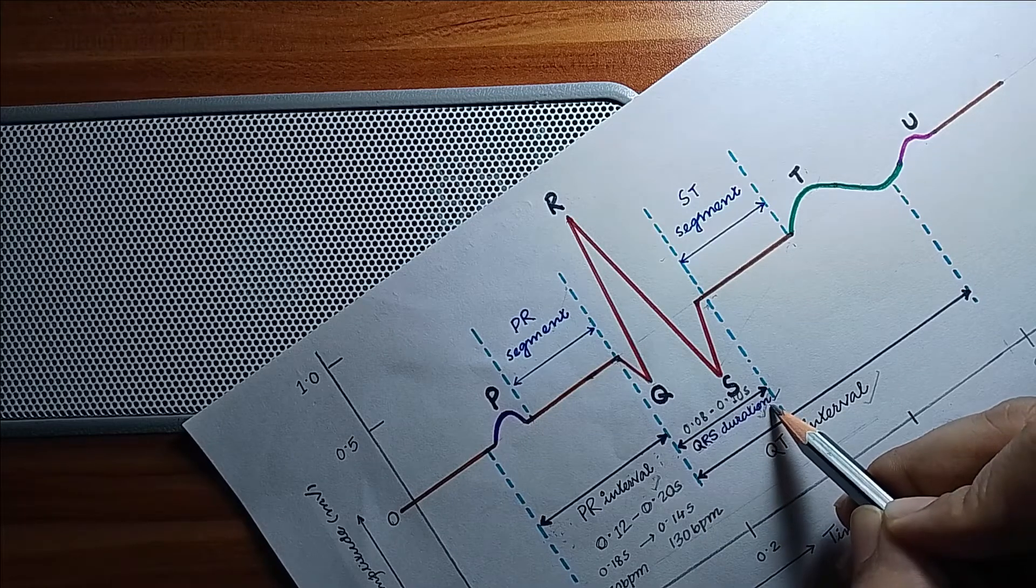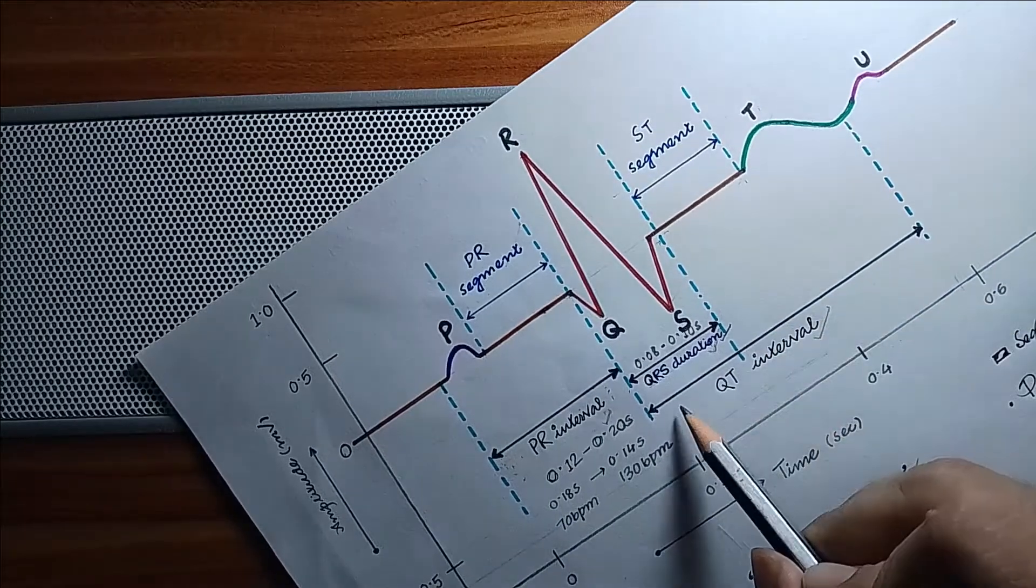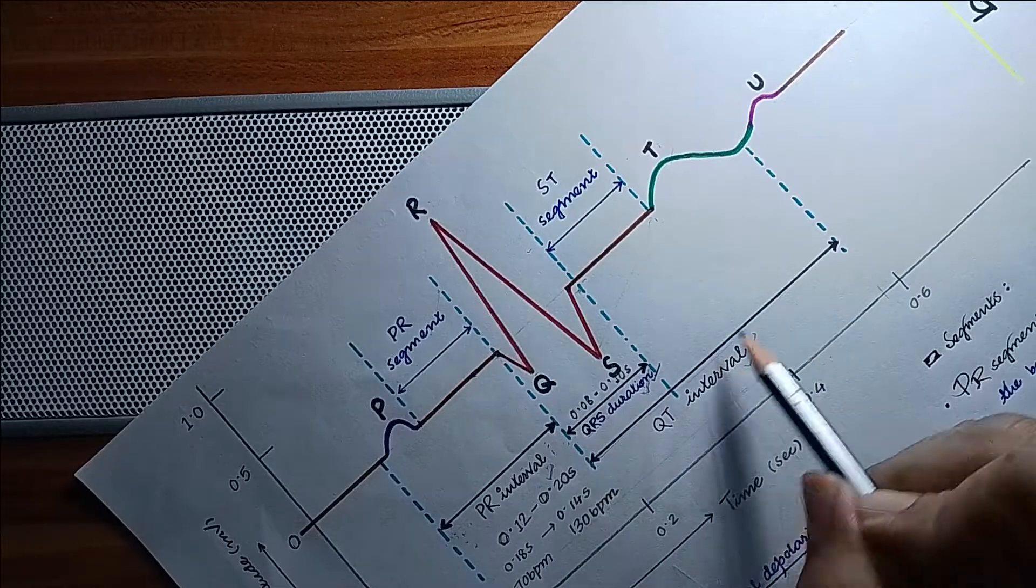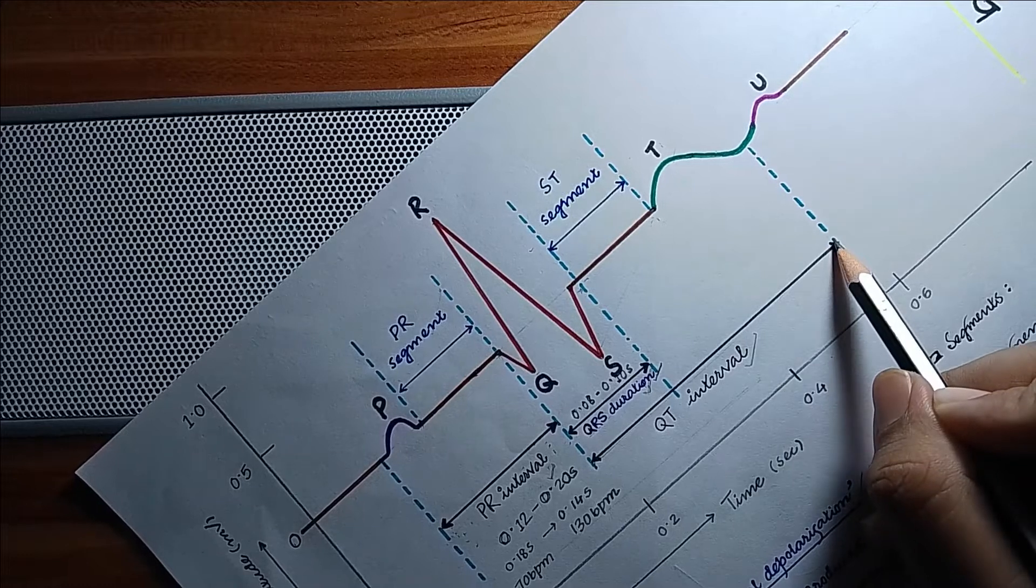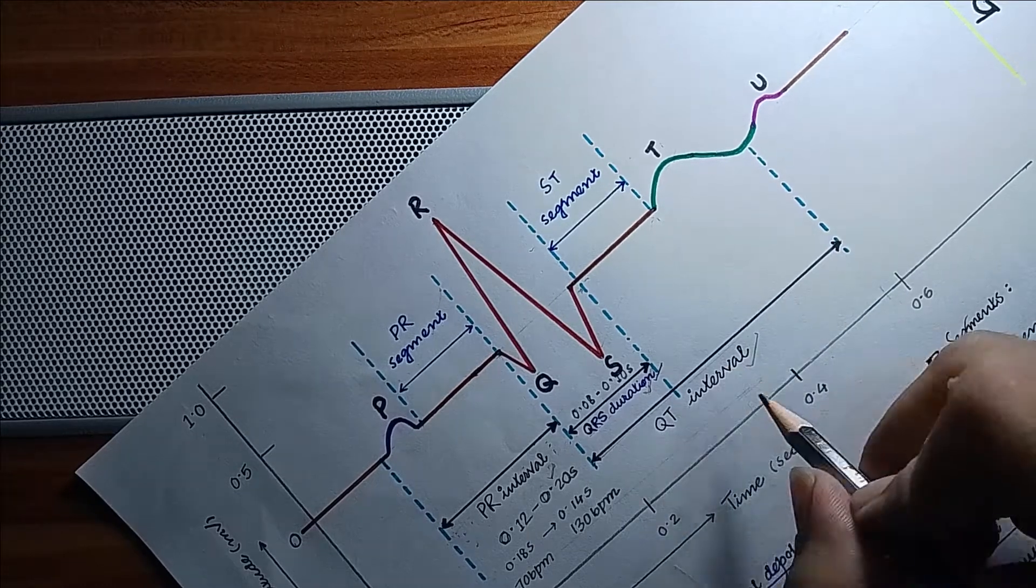Now the QT interval. It is measured from the beginning of QRS complex to the end of T wave. The normal range of this is 0.40 to 0.43 seconds.